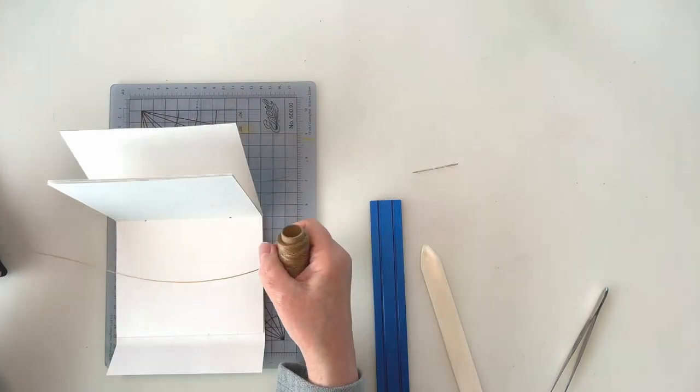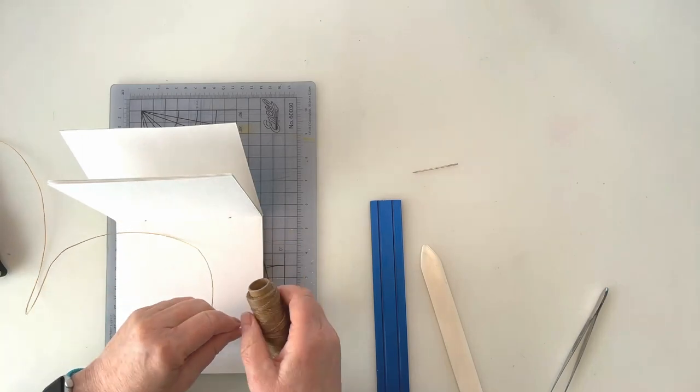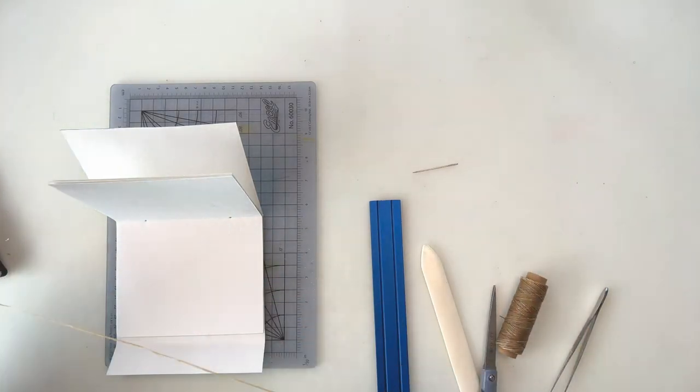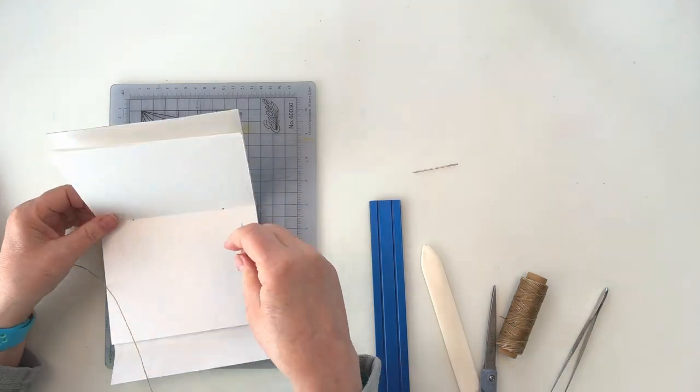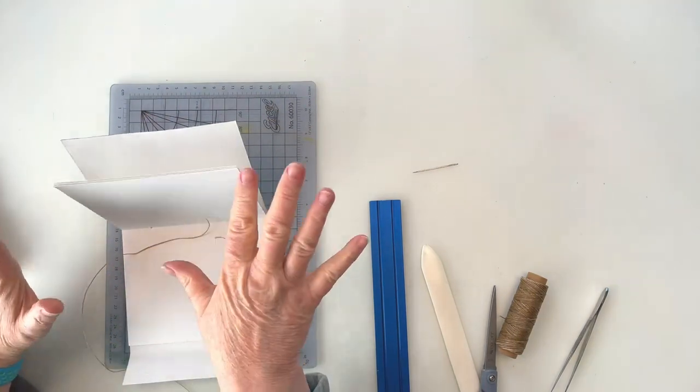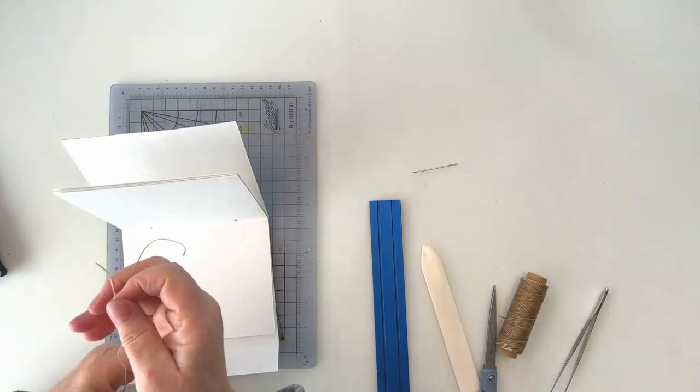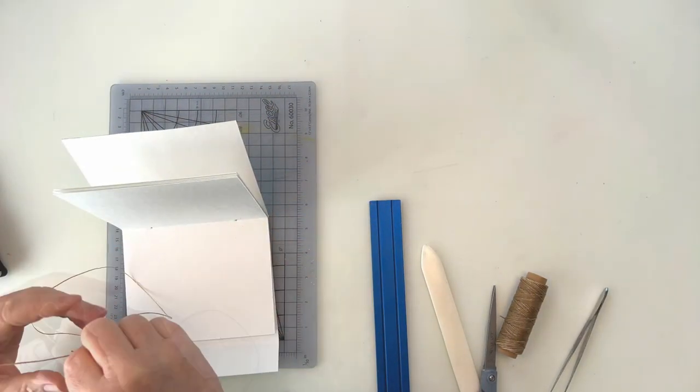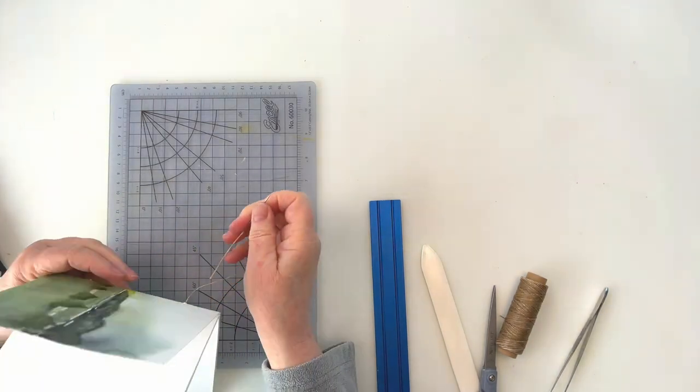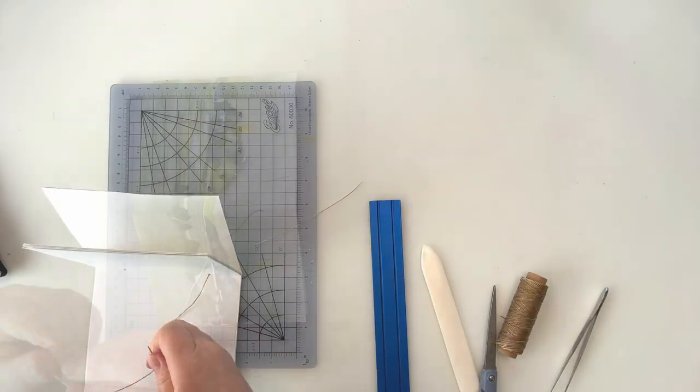Now I'm going to take a length of some sort of strong cord or thread. If you don't have anything else, dental floss works great. And I need a length that's about twice the height of my book, plus some extra to tie knots and be able to sew more easily. And now I'm just going to use a darning needle to pull my thread through from inside to outside on both ends.